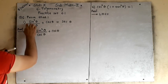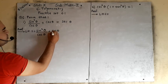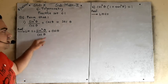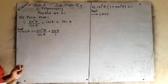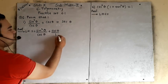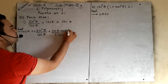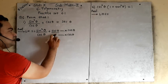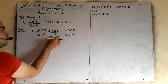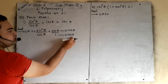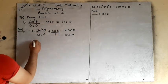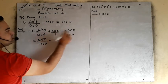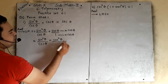First, we copy the left hand side: sin square theta upon cos theta plus cos theta. Addition of two ratios is possible only when the denominator is the same. Here the first denominator is cos theta, but the second term has no denominator — meaning it is 1. So we multiply that term by cos theta over cos theta, giving us sin square theta upon cos theta, plus cos square theta upon cos theta.